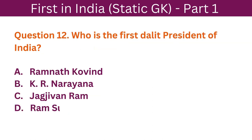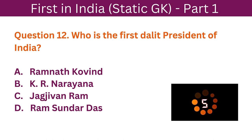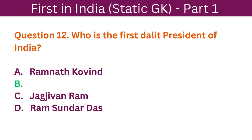Question 12: Who is the first Dalit President of India? A. Ramnath Kovind. B. K.R. Narayanan. C. Jagjivan Ram. D. Ram Sundar Das. The correct answer is B. K.R. Narayanan.